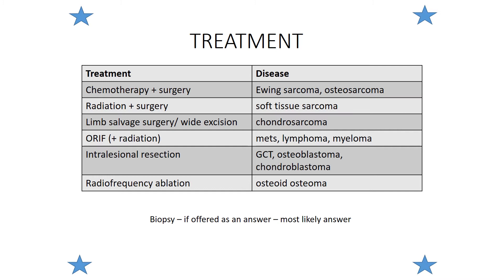This table shows most treatment regimens for sarcomas and benign entities. Chemotherapy and surgery is most commonly used for Ewing sarcoma and osteosarcoma. Radiation and surgery is most commonly used for soft tissue sarcomas — radiation and surgery as standard of care, though chemotherapy remains controversial. Chondrosarcomas are treated with limb salvage surgery or wide excision — surgical management with a good negative margin resection, no radiation or chemotherapy. Metastatic disease, lymphoma, and myeloma are treated with open reduction and internal fixation with consideration of radiation therapy. Giant cell tumor, osteoblastoma, and chondroblastoma are treated with intralesional resection.